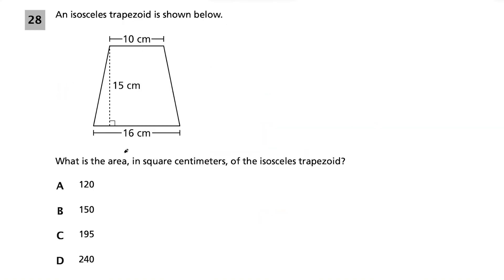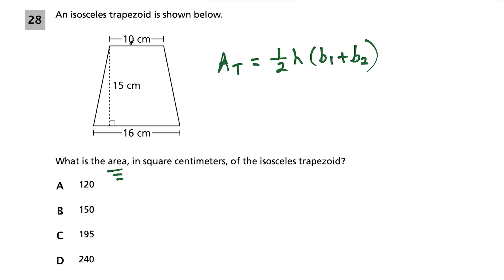Question 28: we want the area of an isosceles trapezoid. The formula is: area = ½ × height × (base₁ + base₂). The bases are the parallel sides. The height is the perpendicular distance between them — the 90-degree angle confirms that the 15 is the height. Some students wonder if the slanted side could be the height, but you need that 90-degree angle.